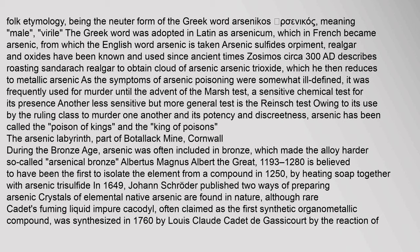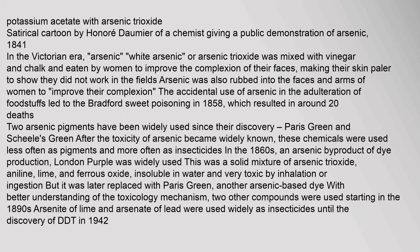Albertus Magnus (Albert the Great, 1193–1280) is believed to have been the first to isolate the element from a compound in 1250, by heating soap together with arsenic trisulfide. In 1649, Johann Schroeder published two ways of preparing arsenic. Cadet's fuming liquid (impure cacodyl), often claimed as the first synthetic organometallic compound, was synthesized in 1760 by Louis-Claude Cadet de Gassicourt. In the Victorian era, arsenic (white arsenic or arsenic trioxide) was mixed with vinegar and chalk and eaten by women to improve the complexion of their faces, making their skin paler. Arsenic was also rubbed into the faces and arms of women to improve their complexion.